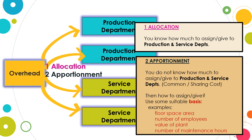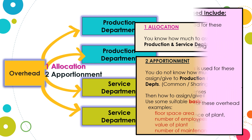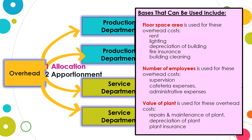The apportionment should be done using a fair, equitable, and reasonable basis of apportionment. The particular cost center will receive the amount of cost apportionment based on the number of basis used. Some basis that can be used include various factors depending on the nature of the overhead.